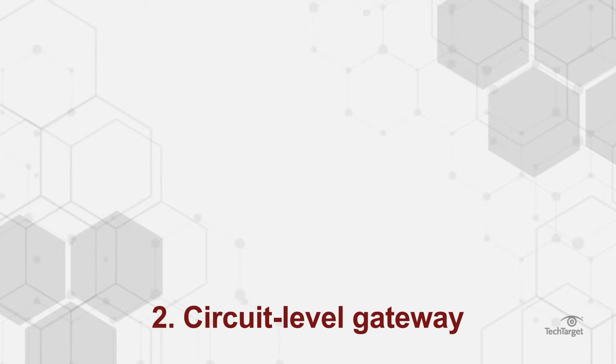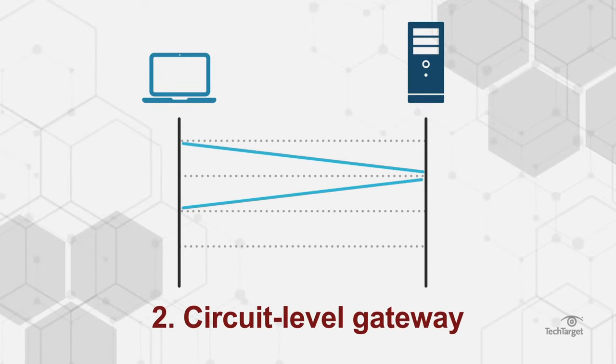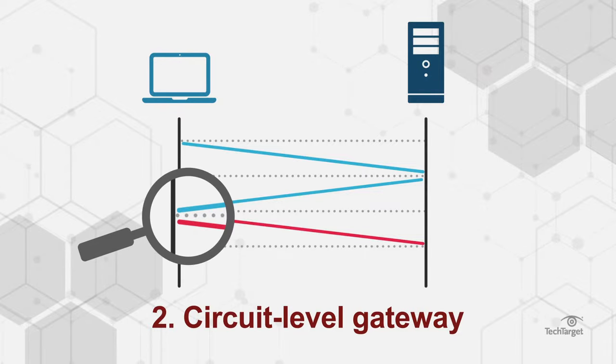Circuit level gateway. These firewalls monitor TCP and other network protocol messages as they are established and determine whether the session being initiated is legitimate and if the remote system can be trusted. These firewalls do not inspect the actual data.